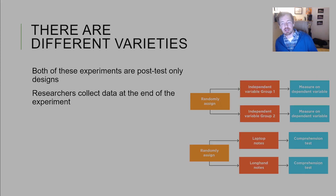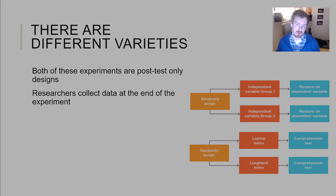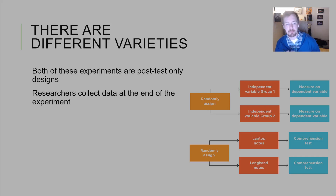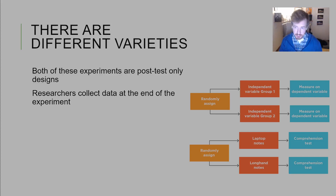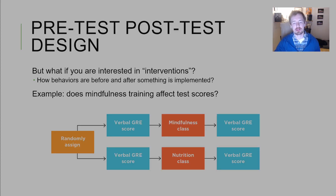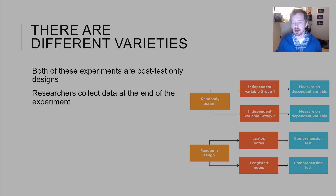There are three varieties of experimental designs. The experiments we looked at were basically post-test studies. A post-test design means people come in, are randomly assigned to a condition, and then tested. In the laptop example, participants were given laptops or longhand notes and then given the memory test — that is a post-test design.